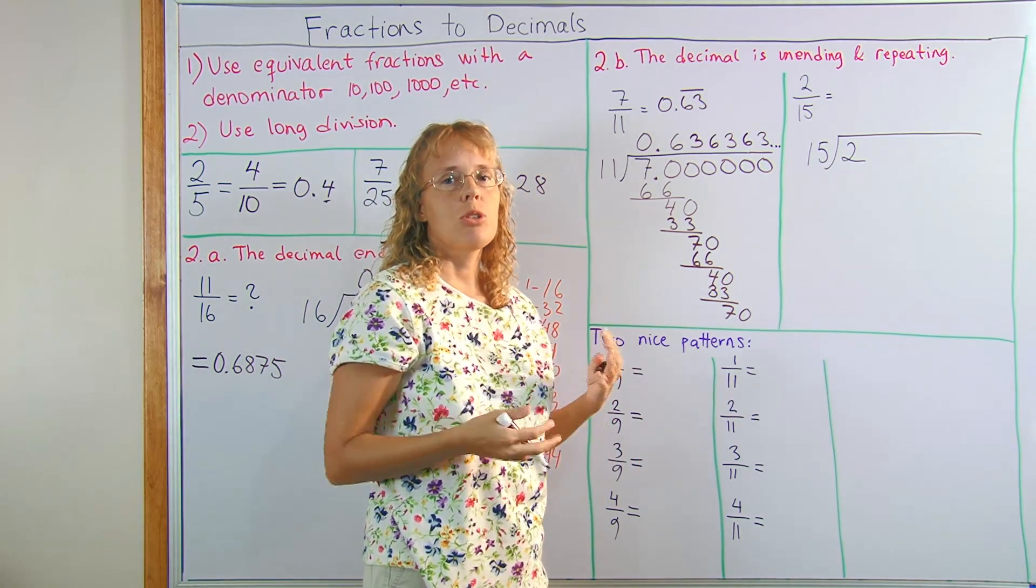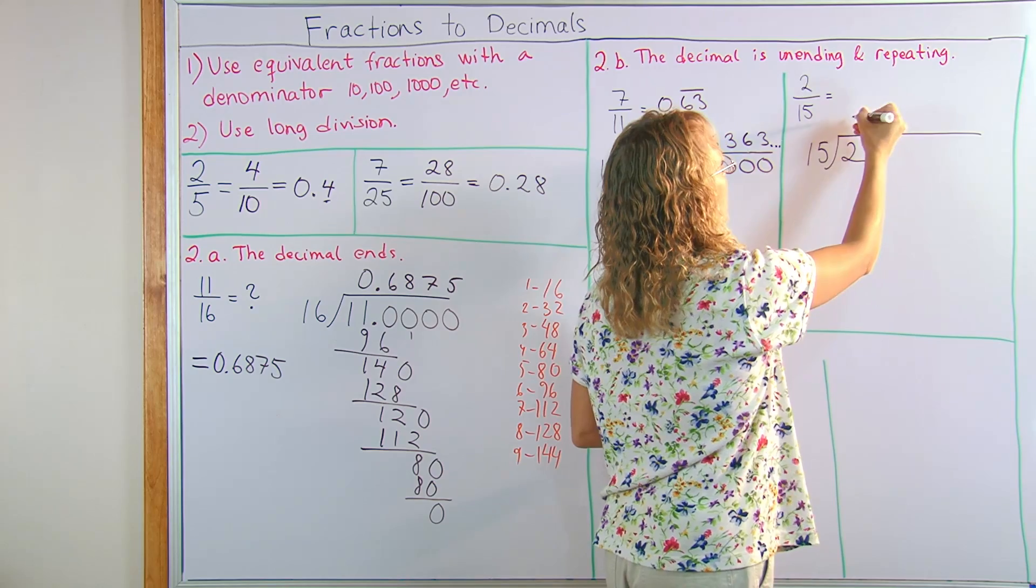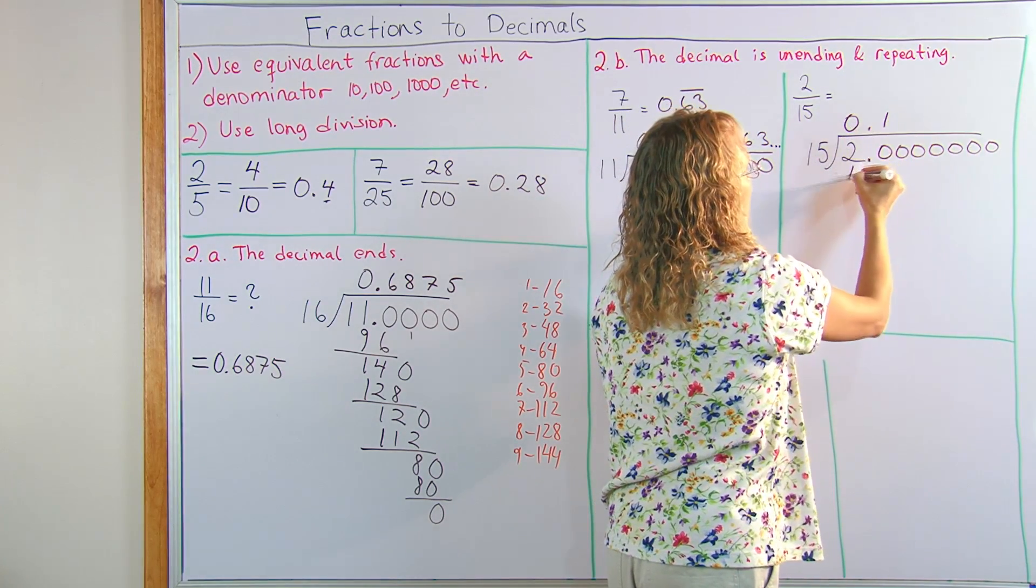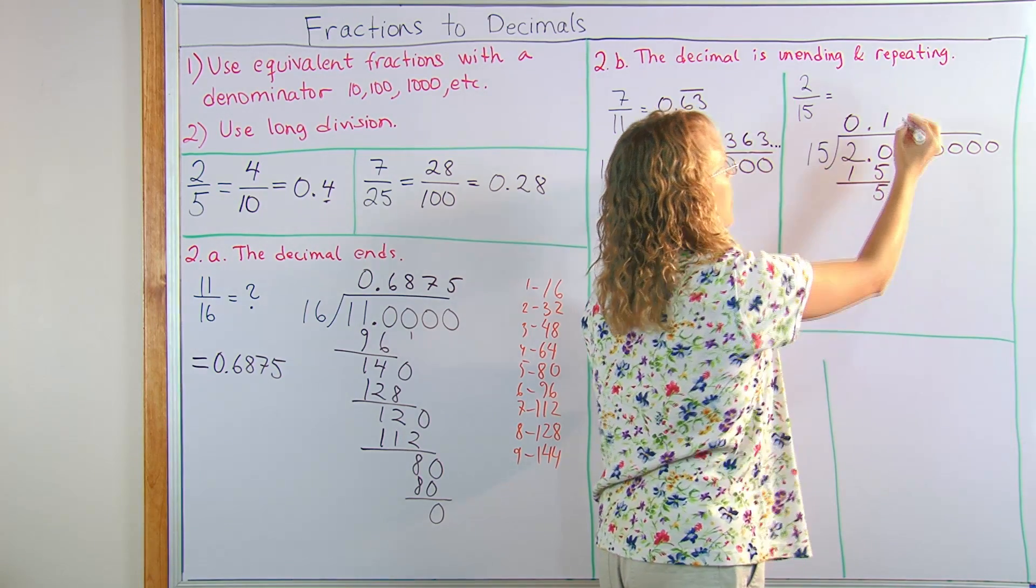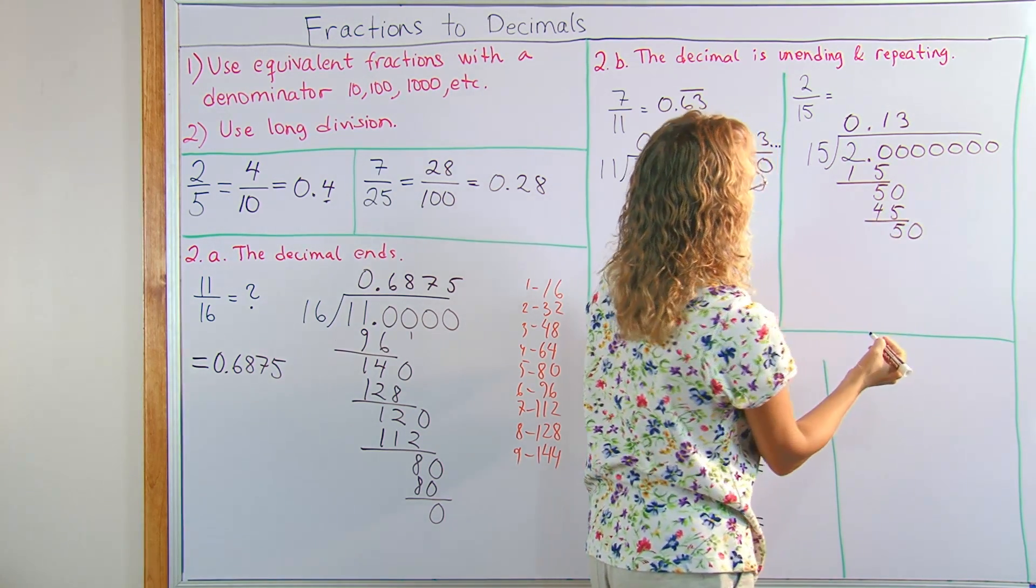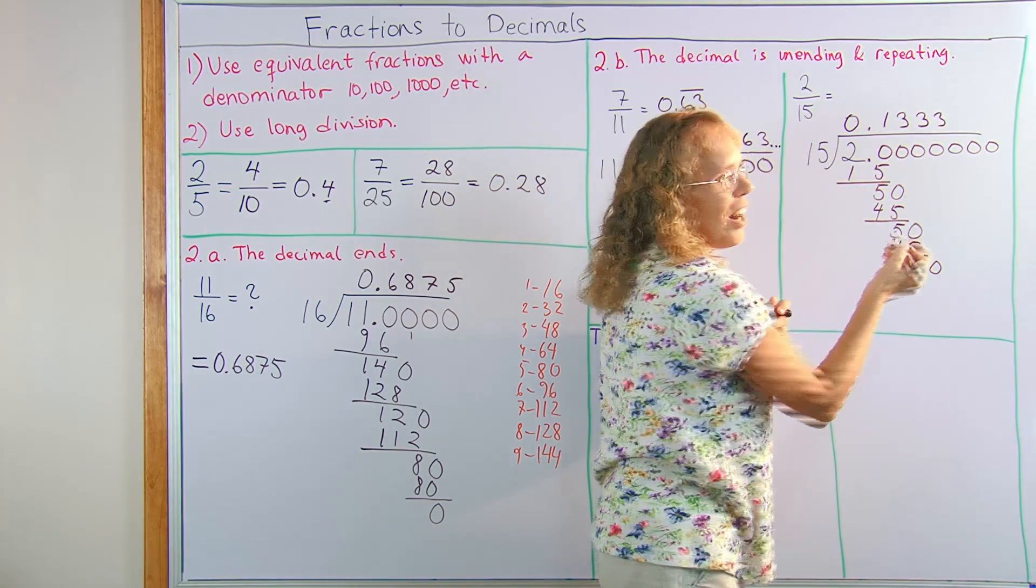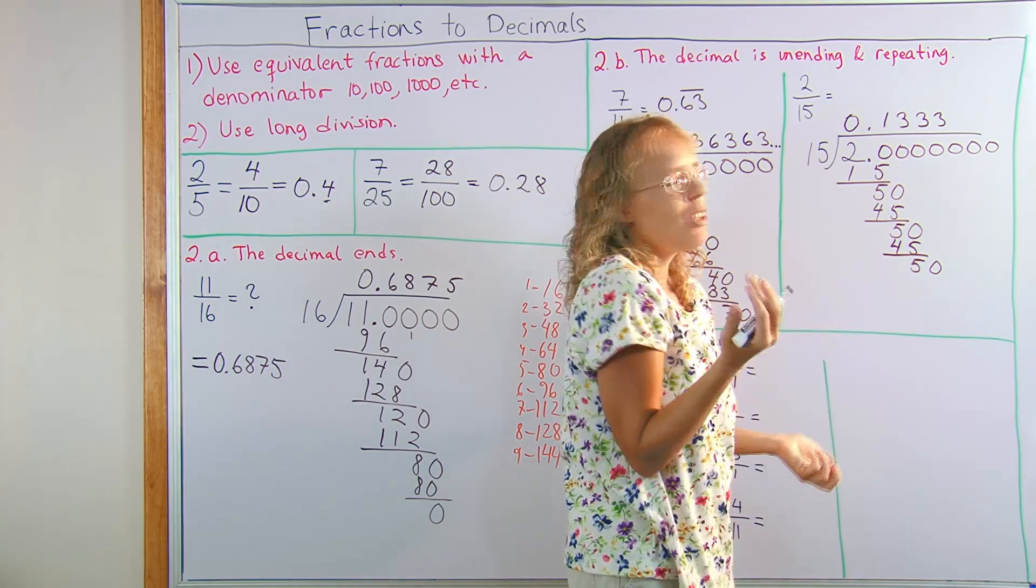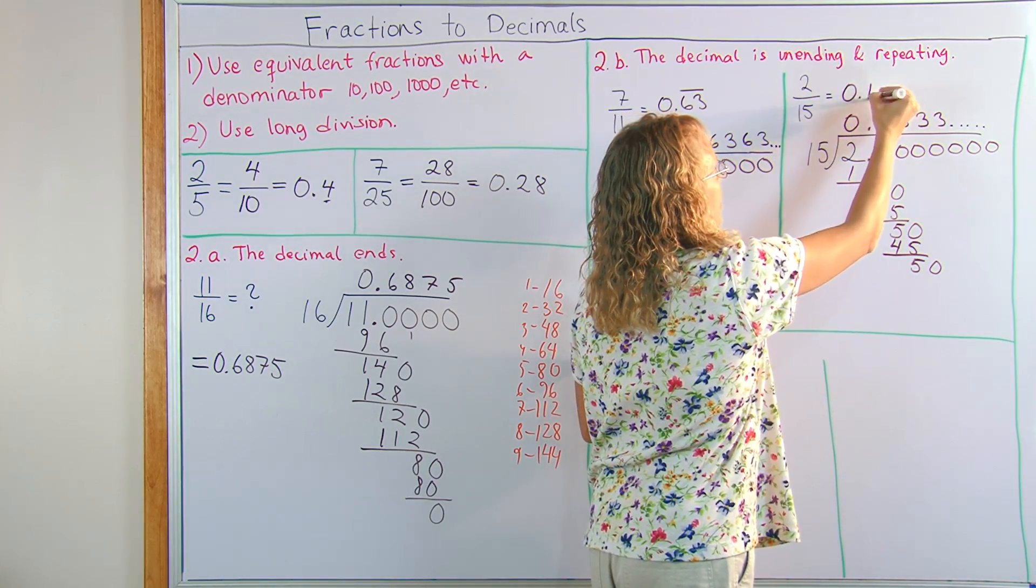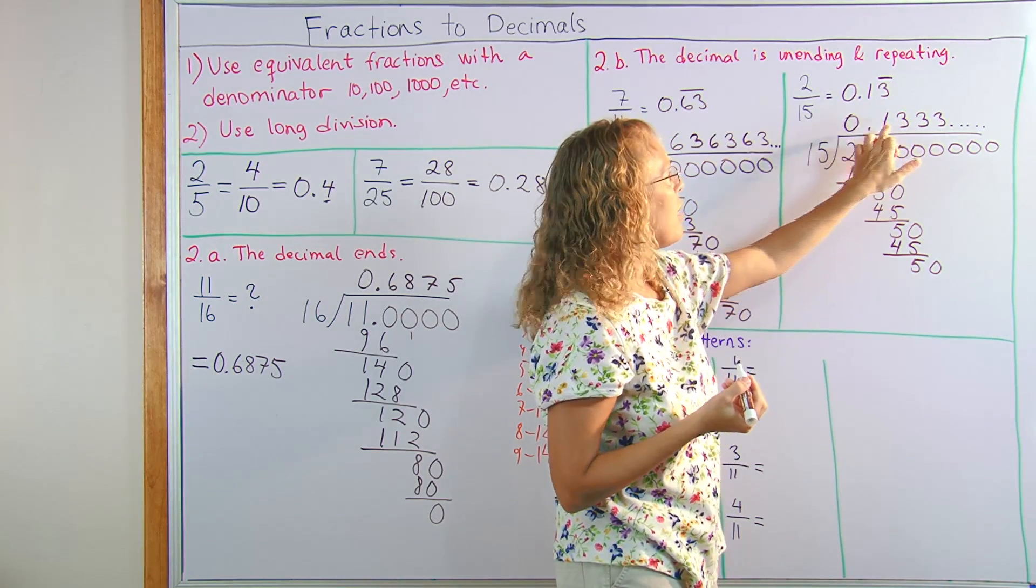Or your problem might ask you to round it to 3 decimals or 2 decimals, which you can do that too. Another example is 2 fifteenths. Let's see what happens here. 15 goes into 2 zero times. Let's put decimal zeros here. And into 20 it goes once, 1 times 15. And then subtract 5 and 0, 50, 3 times. It goes 3 times into 50, 45. And subtract and get 5, and 0. It goes 3 times. Again 3 times 15, 45. Subtract 5, drop a 0, 50, 3 times. I already see that it's going to repeat this: 50, 45, 50, 45. It's never going to get anywhere. So my 3's are going to repeat here. This time when I write it, I only put the line over the 3, because it's only the 3 that's going to repeat, not the 1. The 1 is here and the 3's will keep repeating.